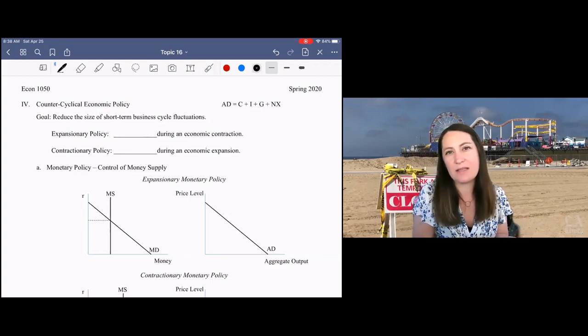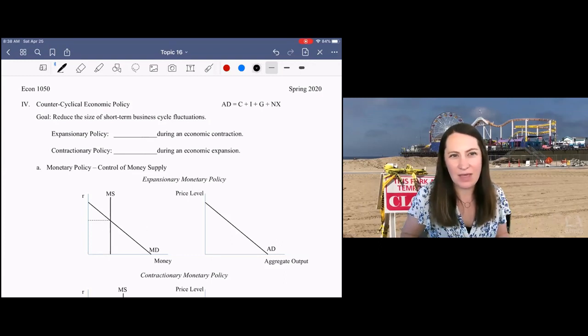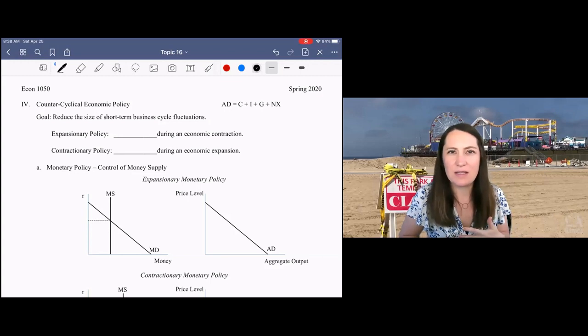Remember, our economy grows at some long-run growth rate around 2% to 3%. But around that long-run growth rate, the economy fluctuates, sometimes growing very quickly and sometimes contracting.